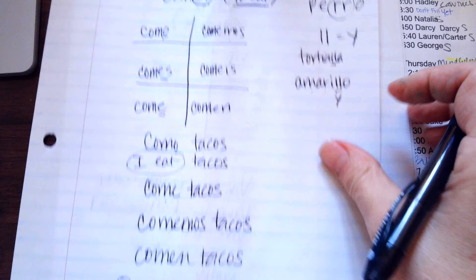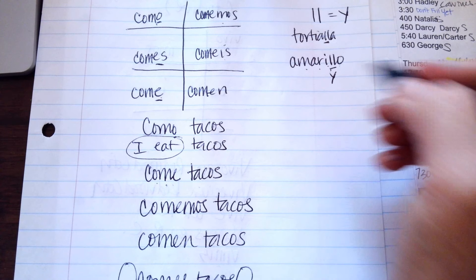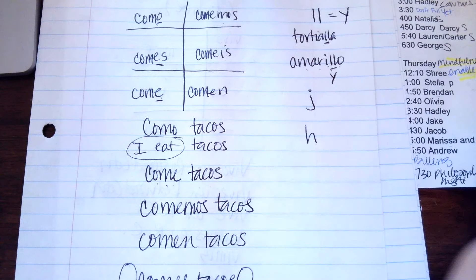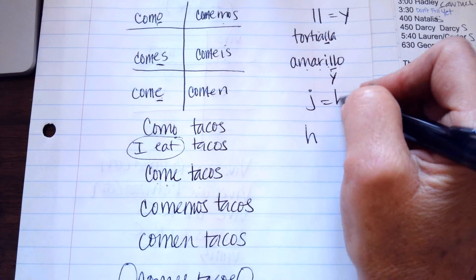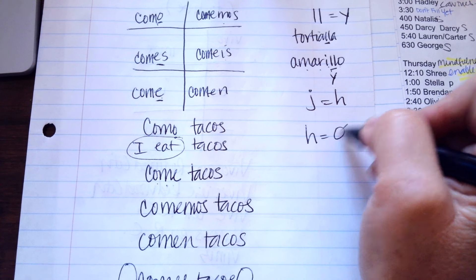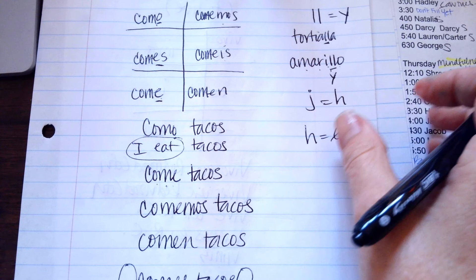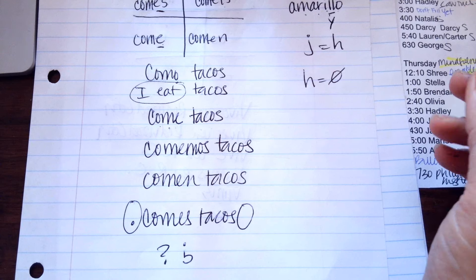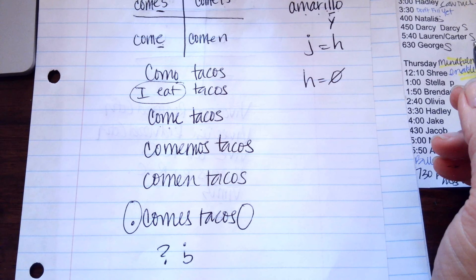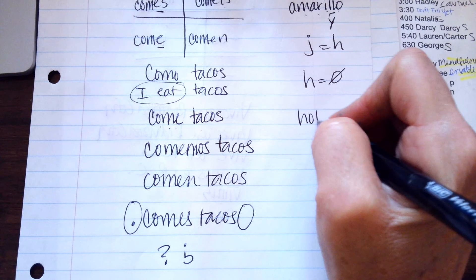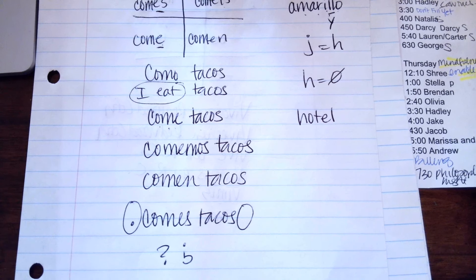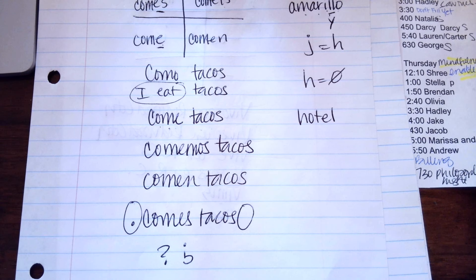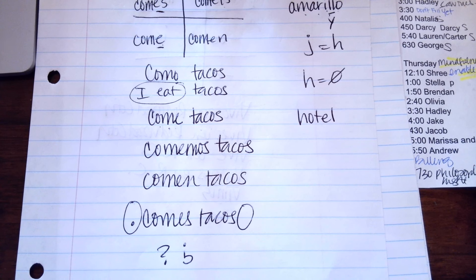And then, J is a H sound. And H is silent. So, this is a H, and this is no sound, nothing. So, if you say, what's an H word in Spanish? Oh, here's a good one. So, we say, hotel. They say, hotel. No H sound. Hotel. Okay.